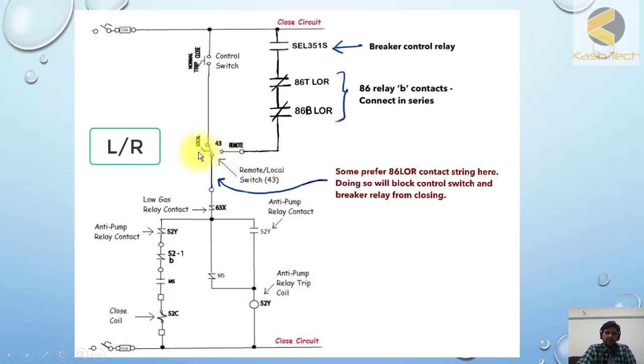This is the local remote operation. If the selector is at local, then the pulse will be forwarded. If it's at remote between SCADA, then it will be forwarded to SCADA. This is a breaker control relay that will initiate the pulse.